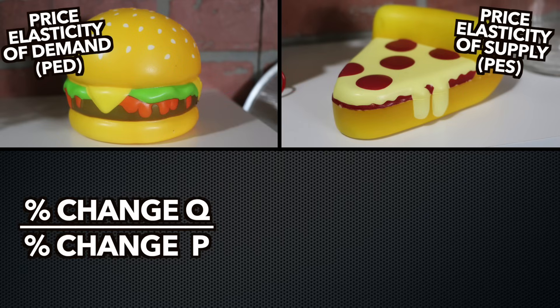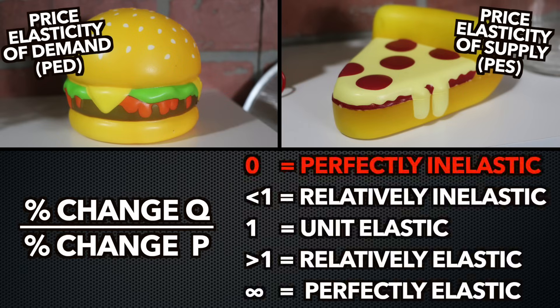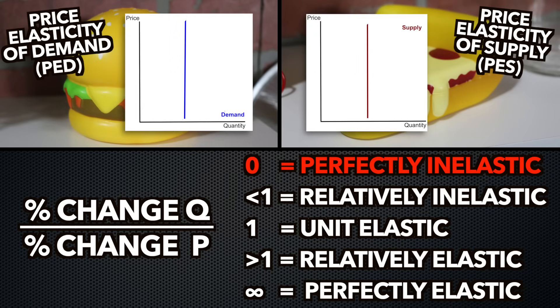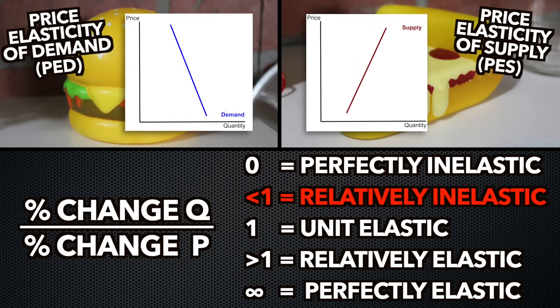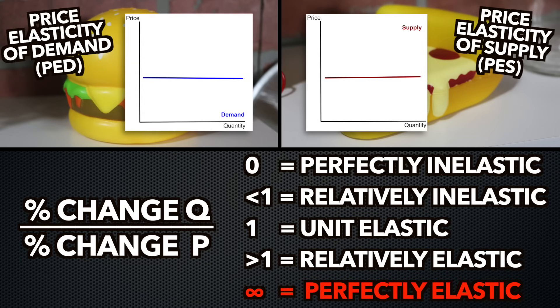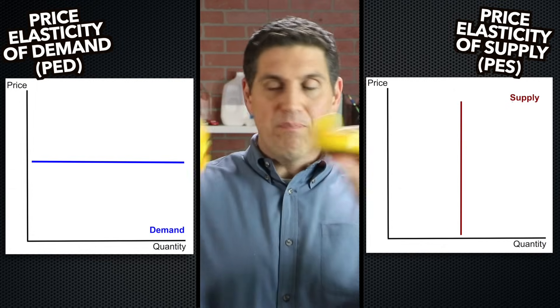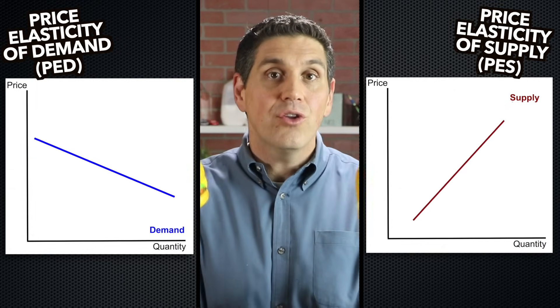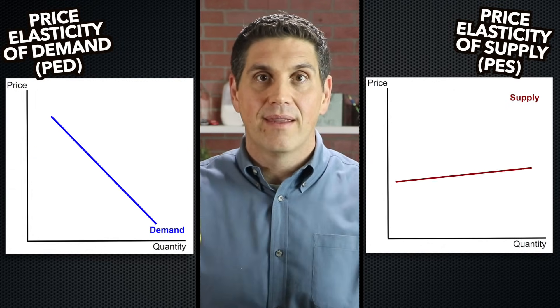For both price elasticity of demand and price elasticity of supply, that coefficient gives you some information. When that number is zero, that means the demand or supply is perfectly inelastic. When it's less than one, it's relatively inelastic. When it's one, it's unit elastic. When it's greater than one, that's relatively elastic. And the last one is perfectly elastic. In both cases, these numbers tell you what type of curve you're looking at.